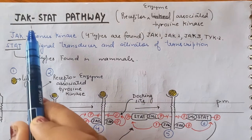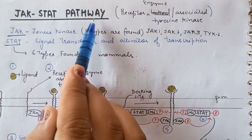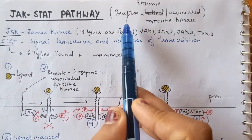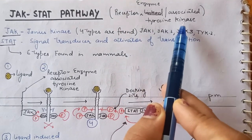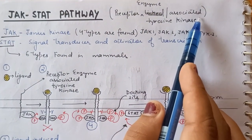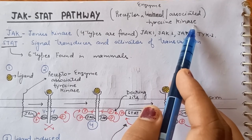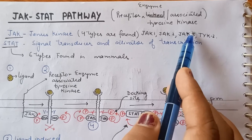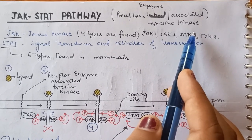Hey friends, in this video we are going to study about the JAK-STAT pathway. The JAK-STAT pathway belongs to a receptor which is the enzyme-associated receptor having tyrosine kinase activity. These enzyme-associated receptors are those receptors which require an extra enzyme associated at the C-terminal acting as a catalytic unit, because the C-terminal of the receptor itself cannot act as a catalytic unit.